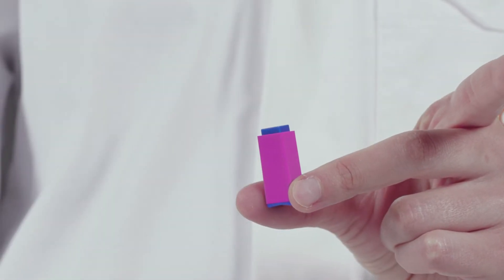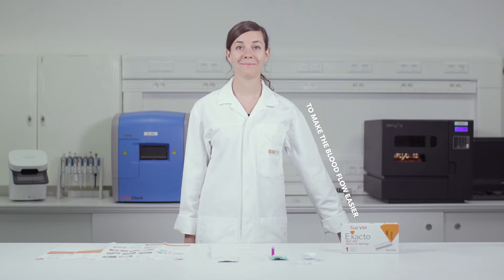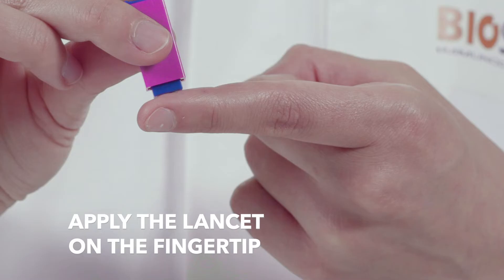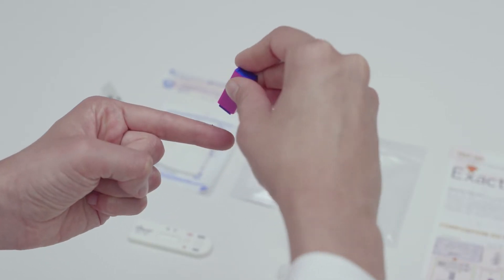Remove the cap from the lancet. To get the blood flowing easier, let your arm hang down by your side. Position the lancet on your fingertip and press the activation button while pressing firmly on the other end.